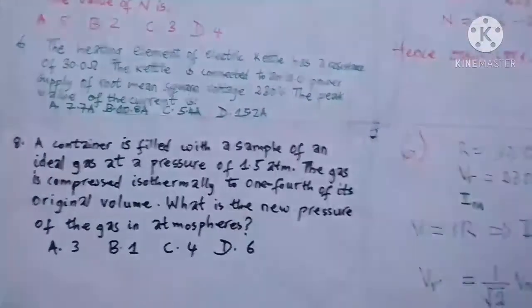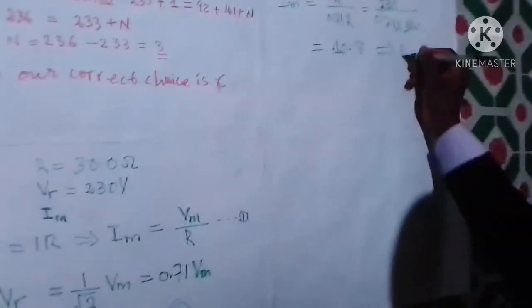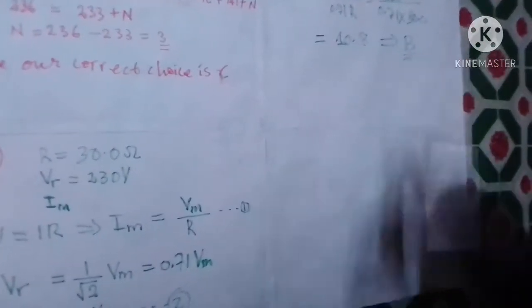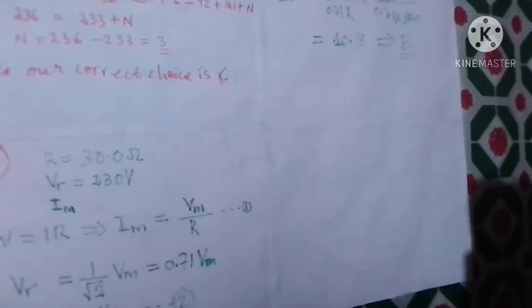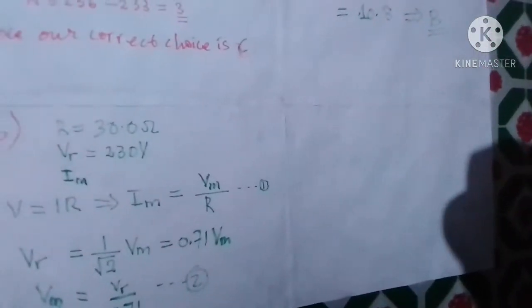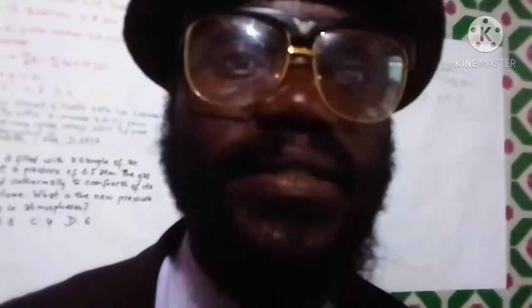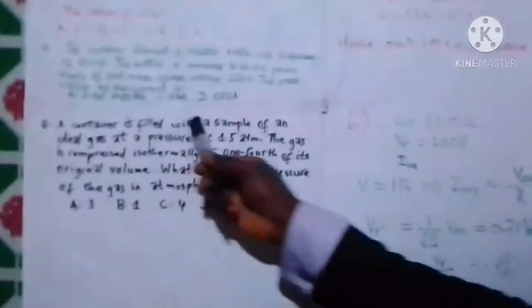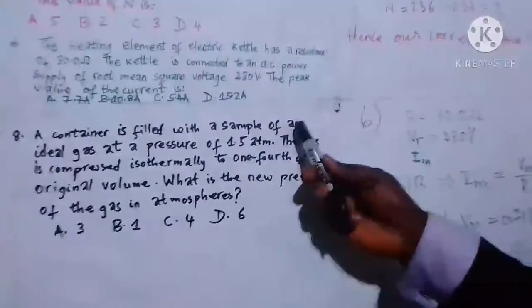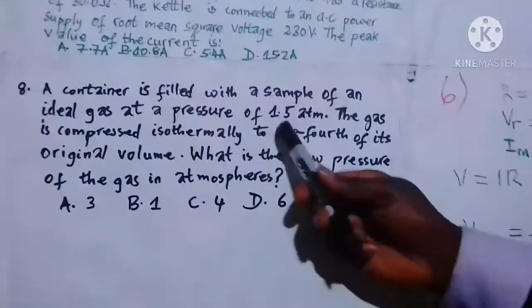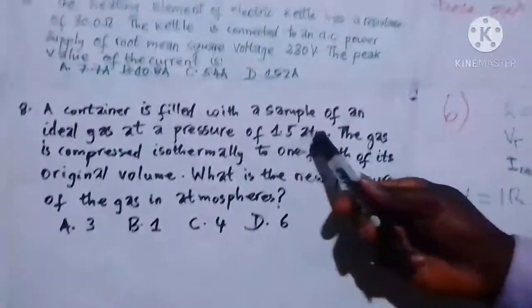This gives us 10.8. Looking at the different choices, 10.8 corresponds to B, so B is our correct choice. Now let's look at question number eight. It says a container is filled with a sample of an ideal gas at a pressure of 1.5 atmospheres.